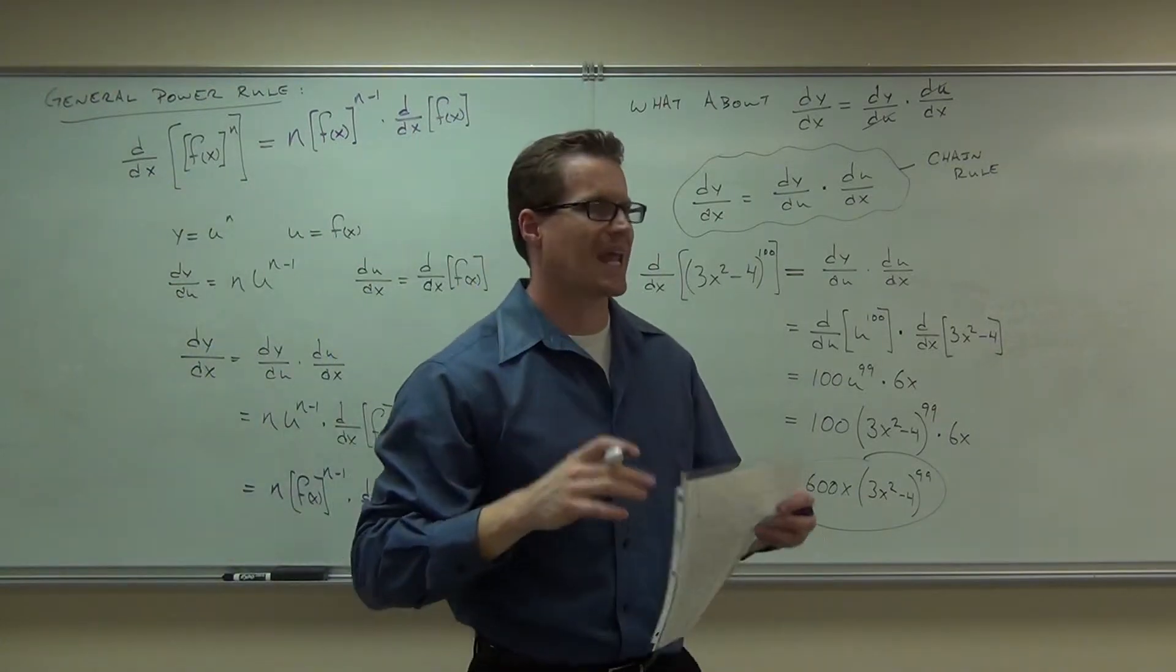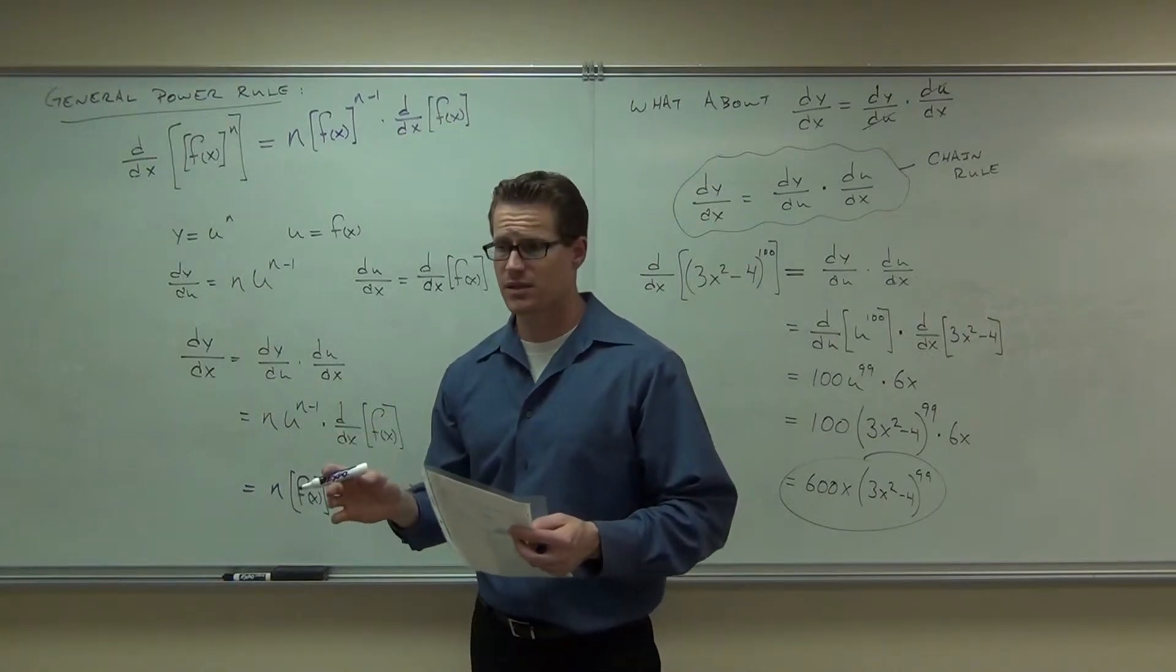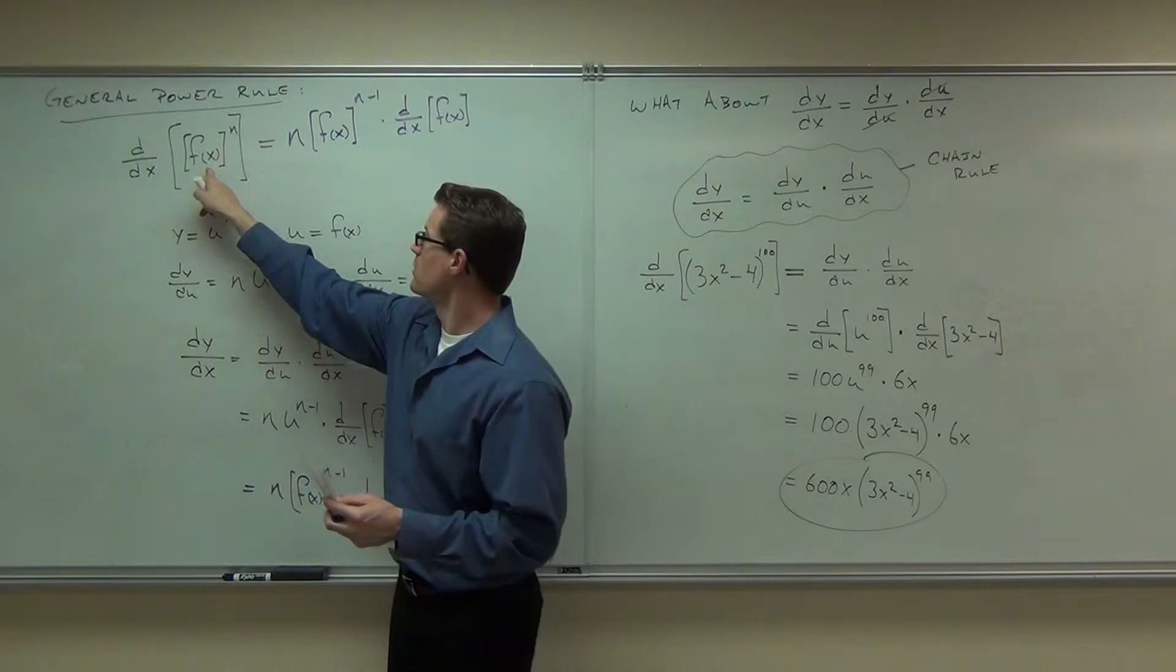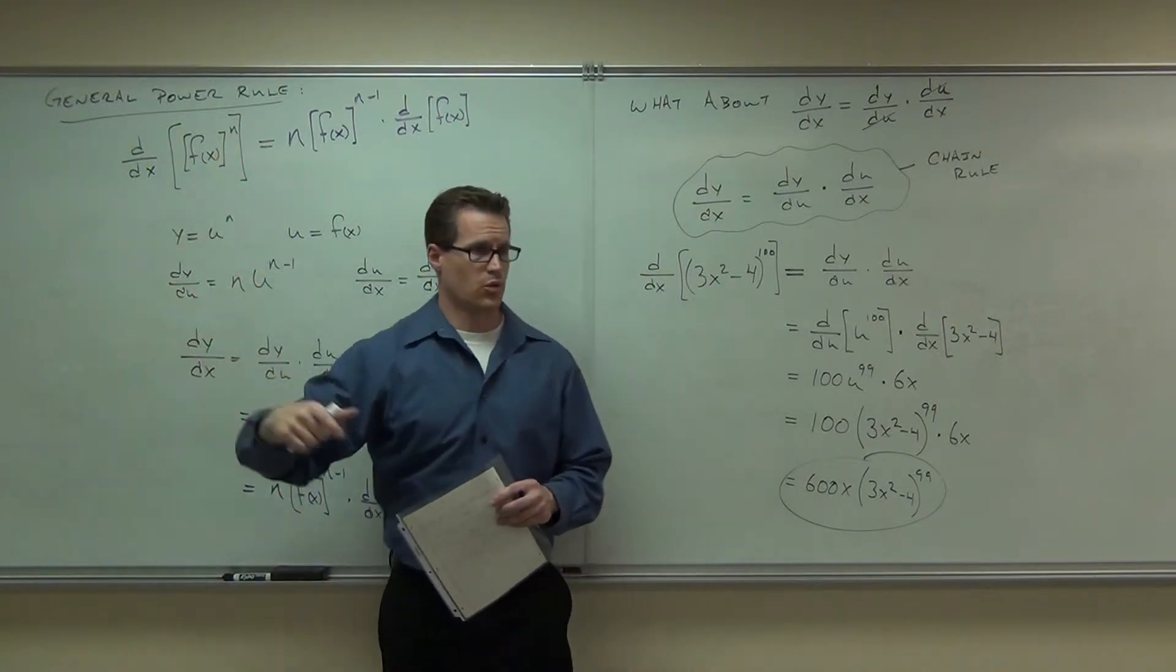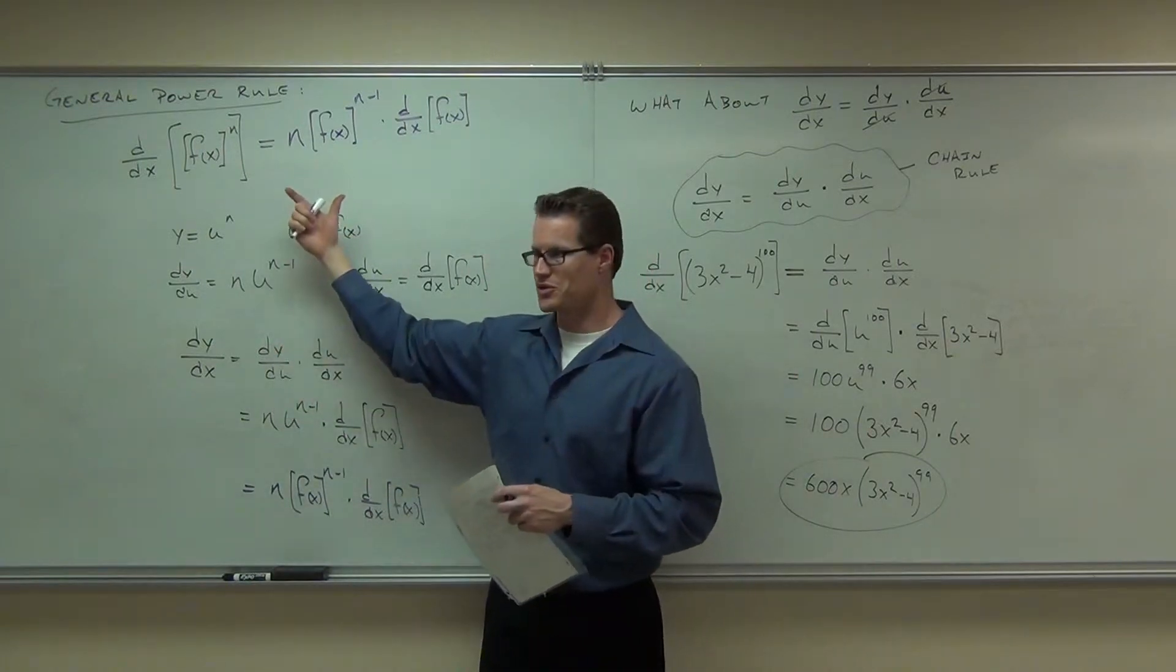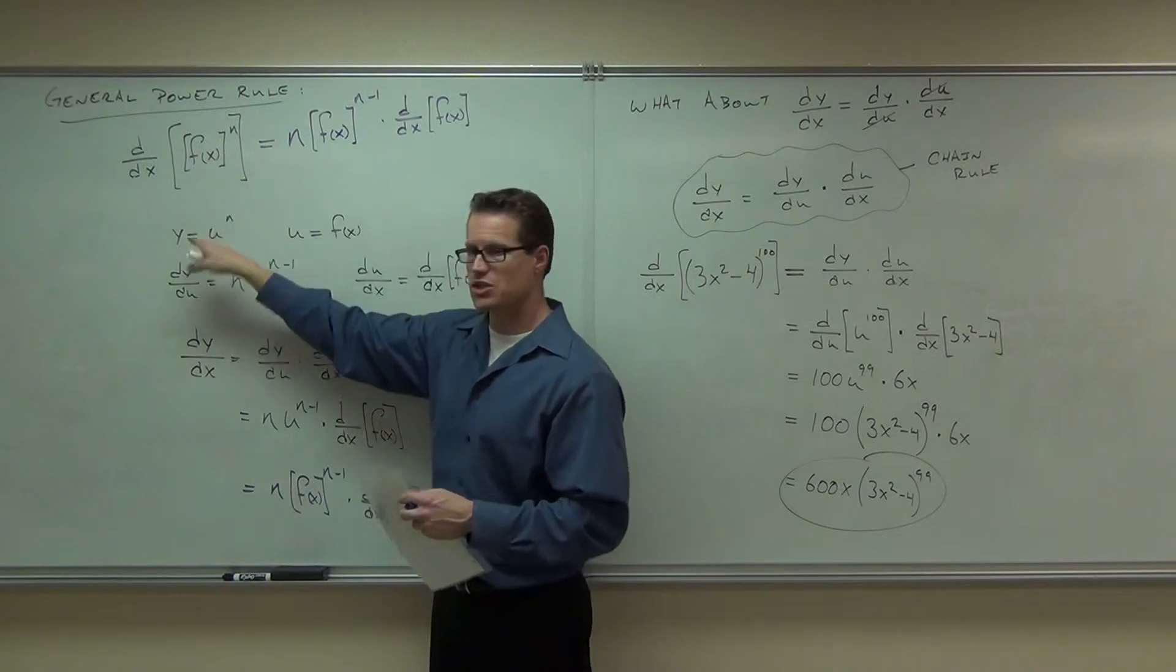Now, did we say anything about f of x at all? Did we make any qualifications about f of x? So then this should work in general, right? Anytime we have a function raised to some power, we could use the chain rule on it every single time. We led to a formula. I just invented this formula for you. Did you guys see it?